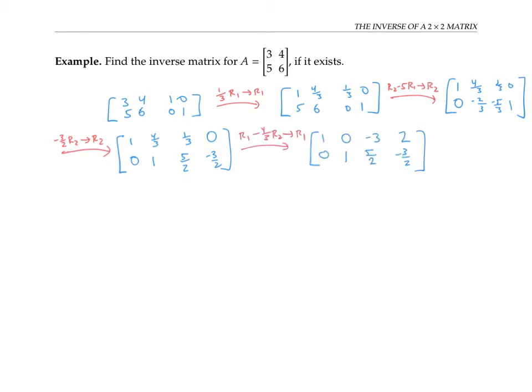Since we were able to obtain the identity matrix as our left chunk after row reduction, the inverse matrix A inverse exists and lies in the right chunk. This is our inverse matrix.